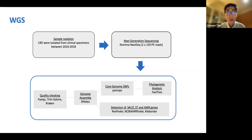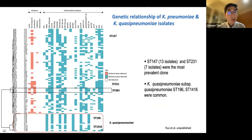We used Illumina next-generation sequencing with a standard pipeline to assemble the genome, call variants, and search databases for AMR genes. We also looked for virulence genes using software developed by the Kat Holt group in Melbourne, now in the UK. This summary diagram illustrates the genomic epidemiology of all these Klebsiella isolates.